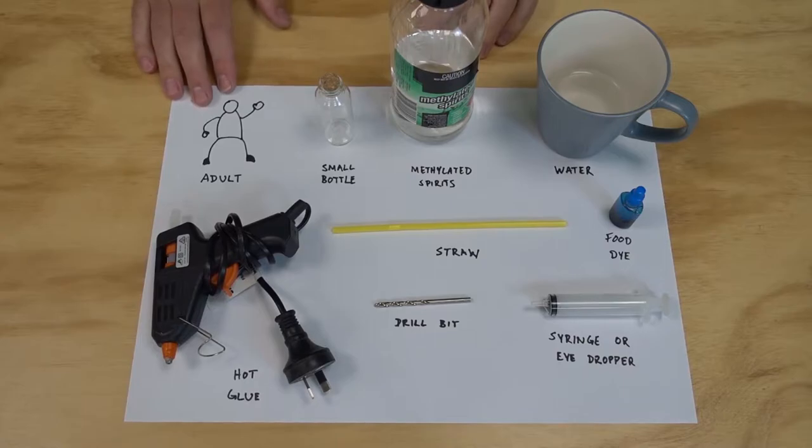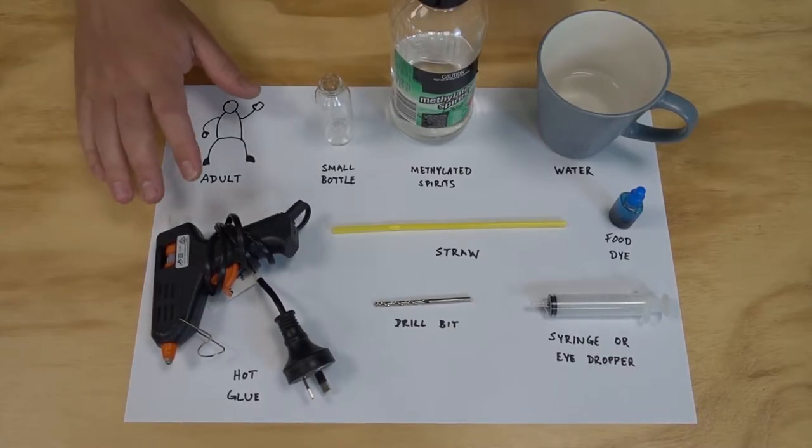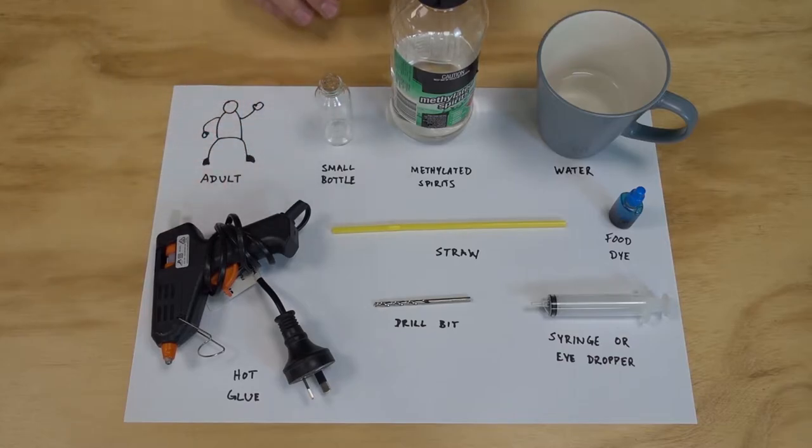Normally in my videos I don't talk about having an adult to help until the end, but today I'm going to say it right up front because we're going to be using some things like hot glue and a drill and some chemicals, so make sure you've got an adult to give you a hand with this one.